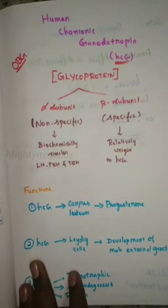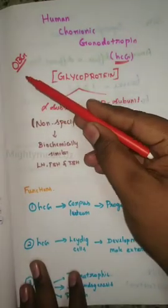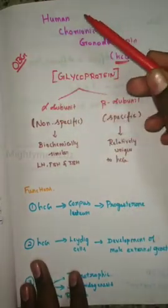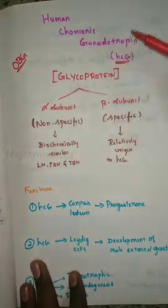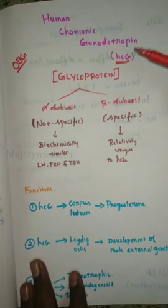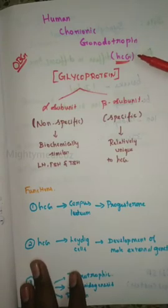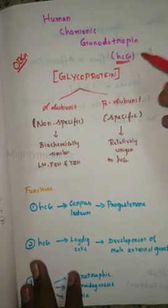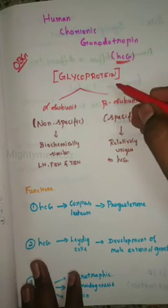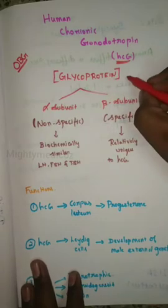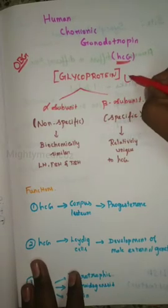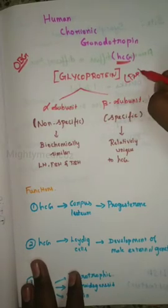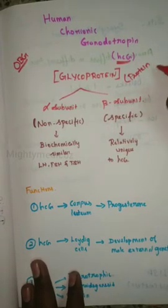Hello, Myri Medicos. We are talking about human chorionic gonadotropin hormone. This is a short form called HCG. This is one of the glycoprotein hormones. This is a protein hormone.